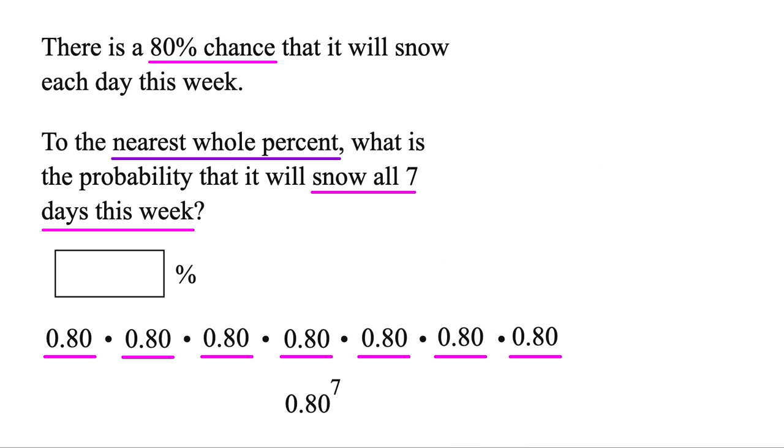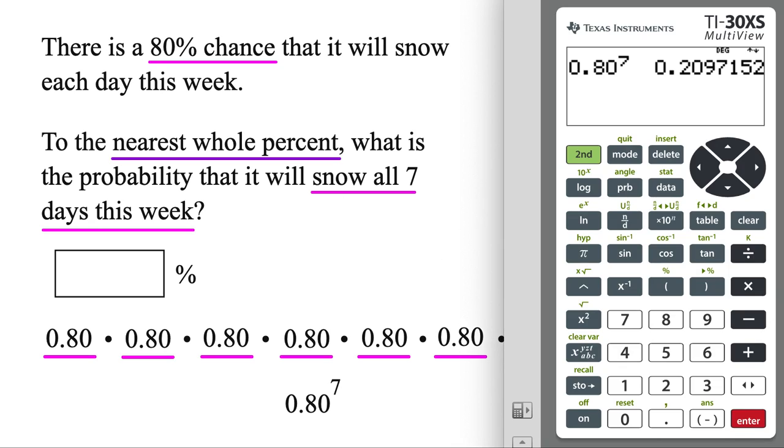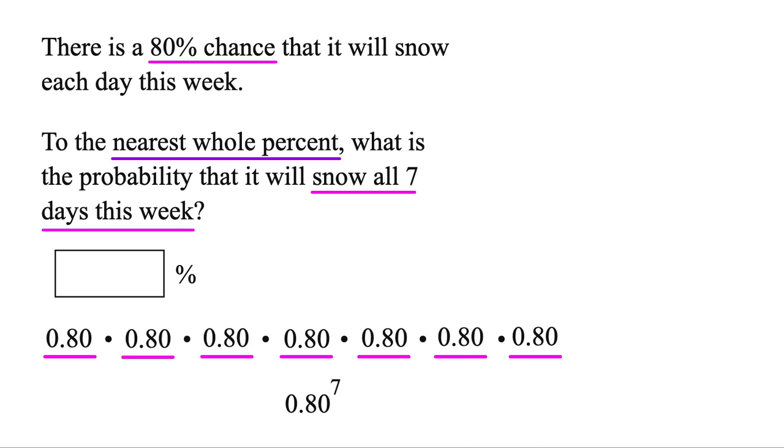But finally, we're rounding it to the nearest whole percent. Imagine it's money. If it's 20.97, we're rounding it to the nearest dollar. We're going to round it up to $21. In other words, 21%. And that's the probability it'll snow all 7 days this week.